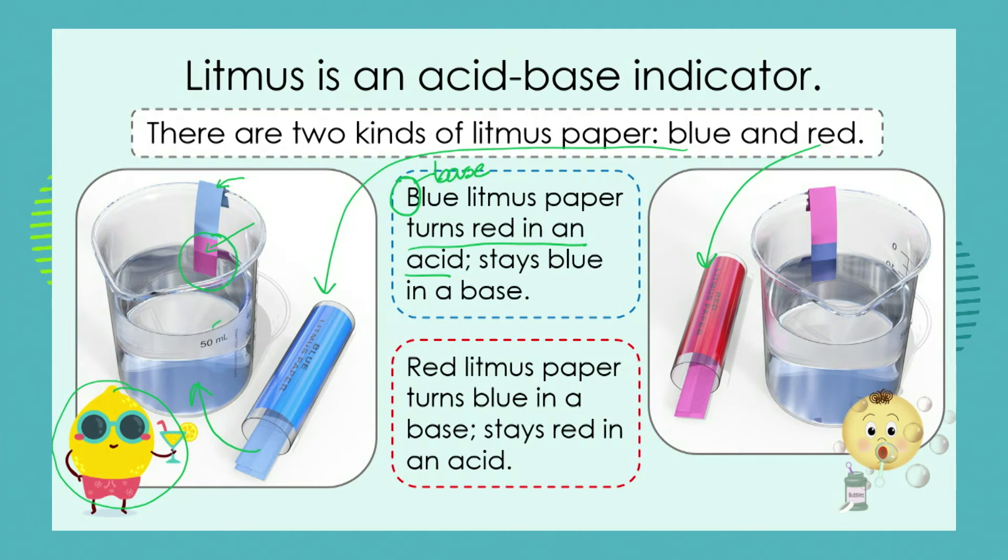Notice that the acid itself doesn't turn red — the indicator doesn't interfere with the acid at all. The acid changes the litmus; the litmus doesn't change the acid. We need to understand that indicators don't change the substance they're dipped into — the substance changes the indicator.